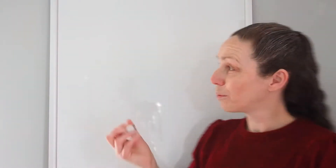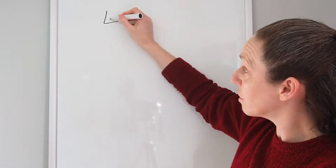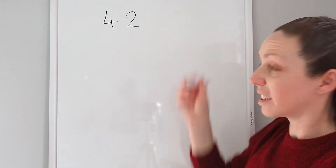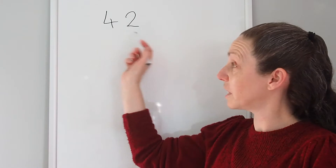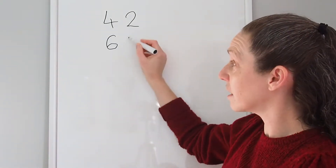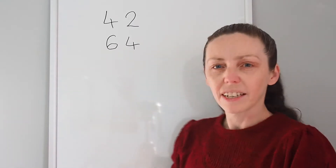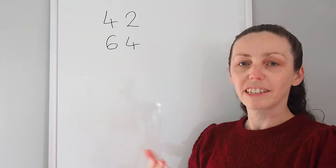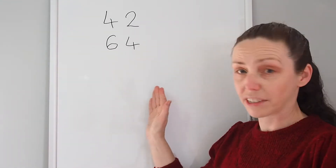So why are teen numbers so difficult for pupils to understand and use correctly? Well, it's partly down to the way that we speak. When we hear a number like 42, we hear the 4 and then the 2 in that order. 64 — I hear the 6 and then the 4. So it follows the way that we normally write from left to right.